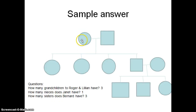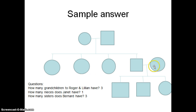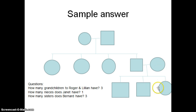Here's the answer. This is Lillian, this is Roger — Deanna, Janet, Mary, and Bernard. Bernard is married to Jane, and they have two boys and a girl. The lines look a little crooked — the computer didn't really cooperate — but normally I'd make that straight on the smart board. How many grandchildren does Roger and Lillian have? They have three grandchildren. How many nieces does Janet have? There's only one niece right here. How many sisters does Bernard have? He has three sisters.